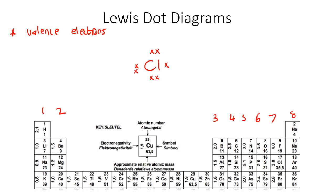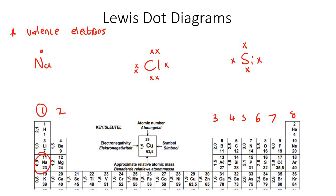Now let's do the Lewis diagram of silicon. Silicon is in group four, so you're going to place one, two, three, four. Let's do Na — sodium is in group one, so that just has one little dot. And magnesium is in group two, so you'd put two dots.